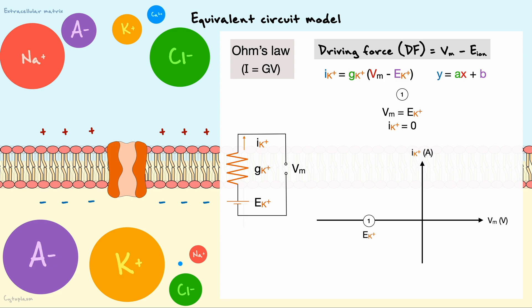Regardless of what the actual values are, if the two potentials are equal to one another, you can see that the current will be equal to zero. This makes sense because it means that the electric and chemical forces acting on potassium are perfectly balanced and no net movement is occurring.